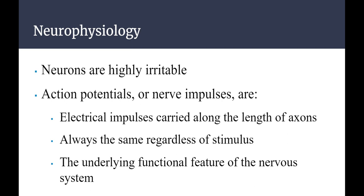In neurophysiology, neurons are extremely excitable. Action potentials — also known as nerve impulses — are electrical impulses carried along the length of axons. They are the same regardless of stimulus — it's an all-or-nothing situation — and run uniformly throughout the entire length. Action potentials are the underlying functional feature of the nervous system; that's what makes everything in the nervous system actually work.